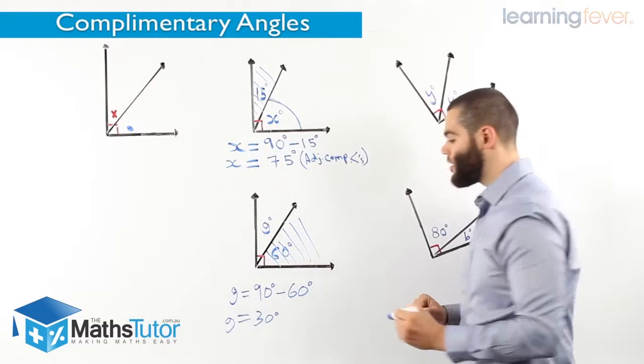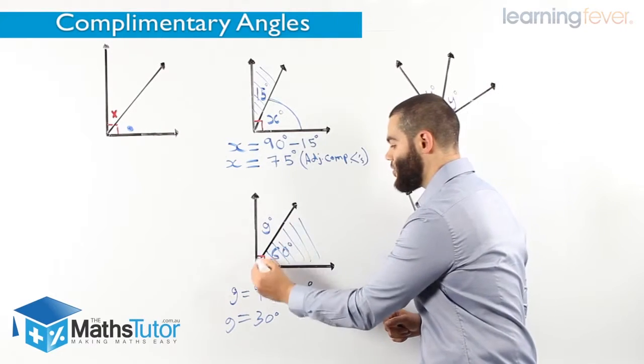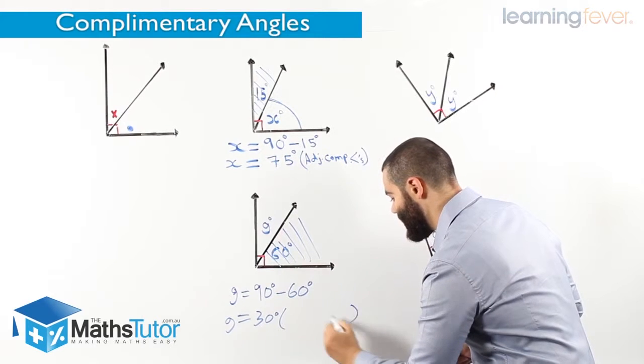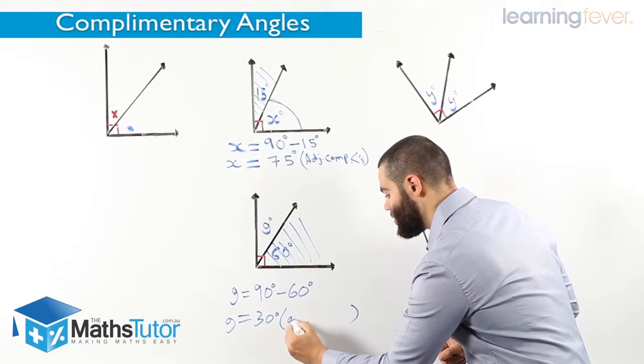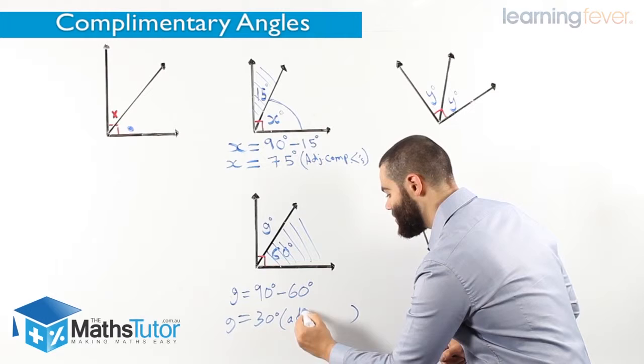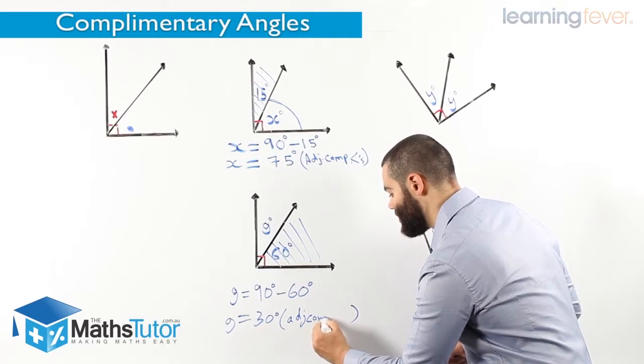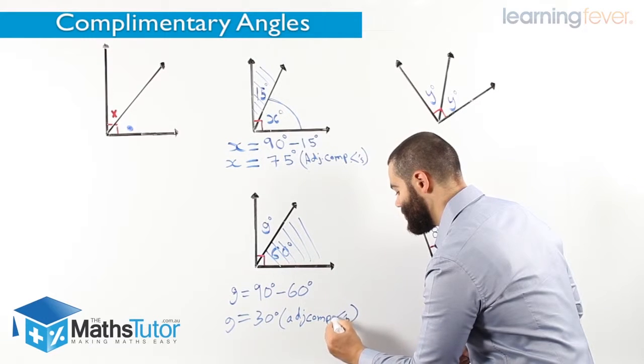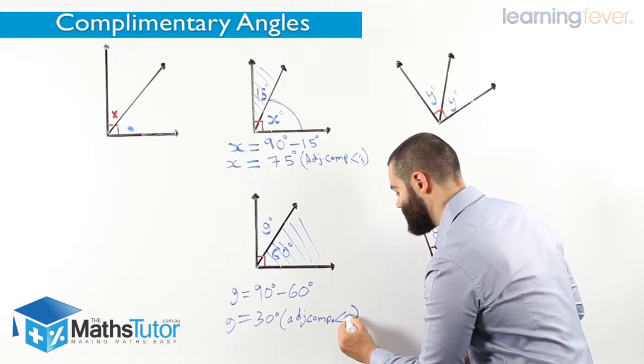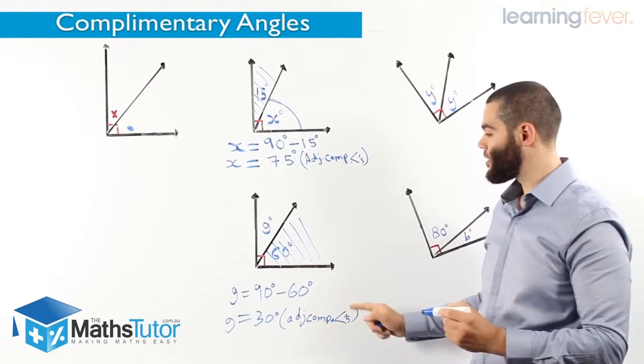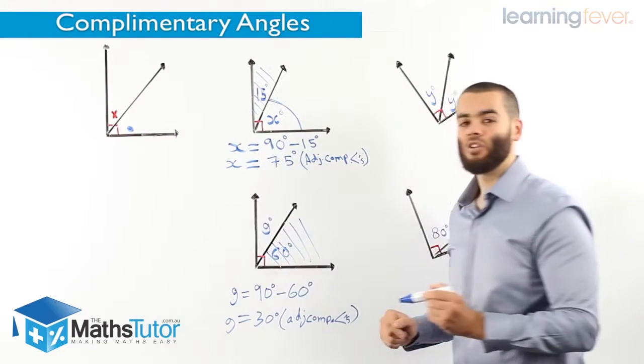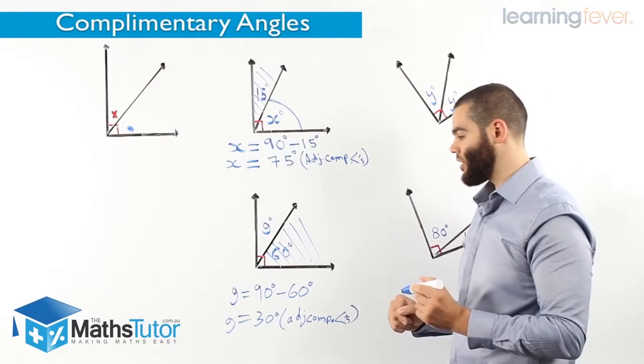So we're saying g is 30 degrees, and of course, we have to write our reason: adjacent complementary angles. We're saying this is the reason why g is 30 degrees.